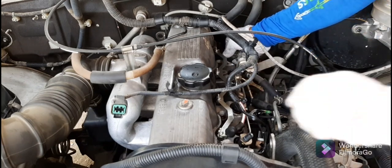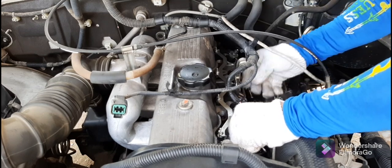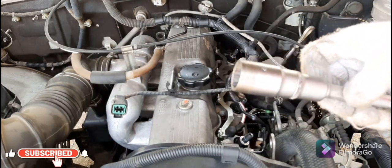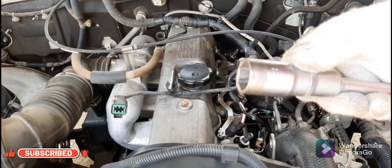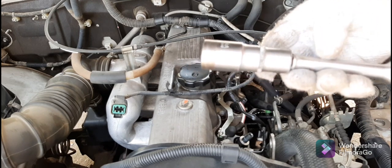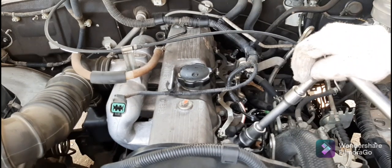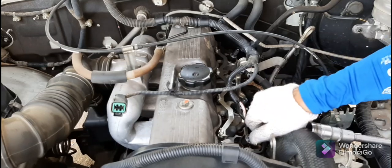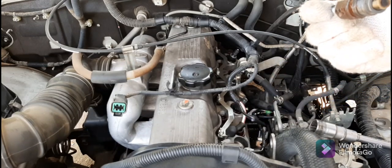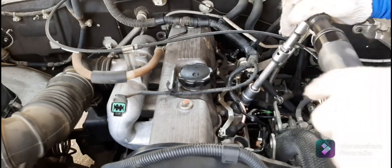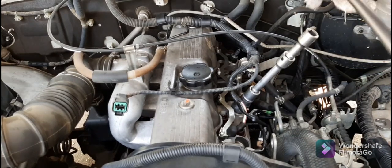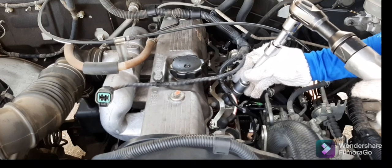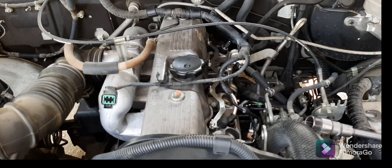Then we will remove the return pipe of our injectors. Then we are going to remove our injectors. We are using 22mm deep socket and extension bar together with the ratchet handle. So this is the one, number one, we already removed. Then the second one.